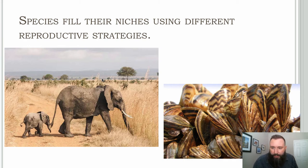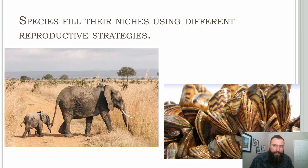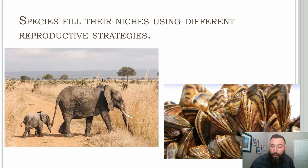Species fill their niches using different reproductive strategies. Think about the different strategies of an elephant versus the quagga mussel, which is an invasive species currently impacting Lake Mead by attaching itself to surfaces including the intake towers at the Hoover Dam. An elephant might have one calf per season, versus a quagga mussel producing one million or more larvae offspring in order to fill its niche.